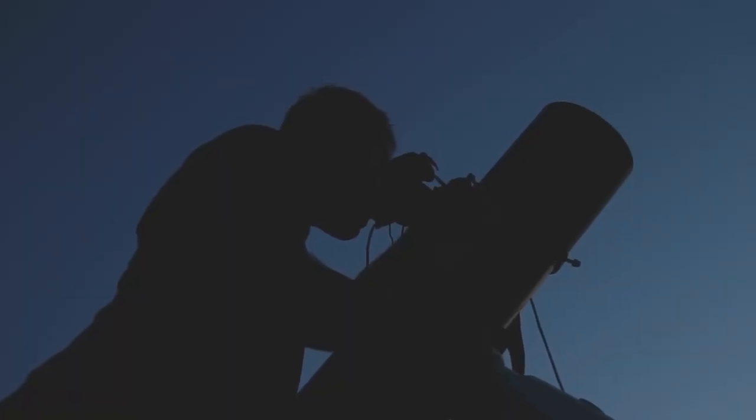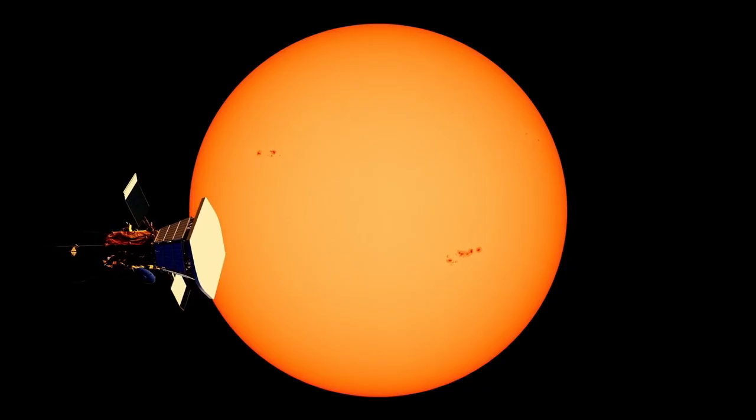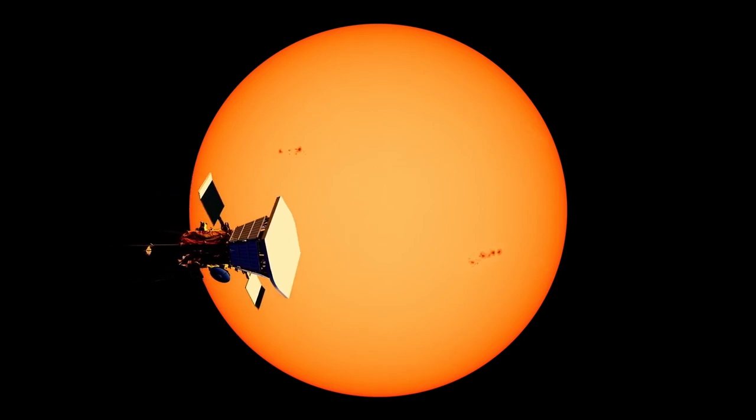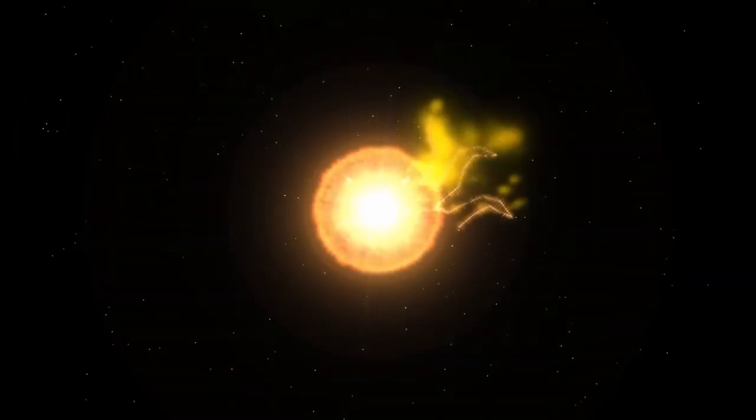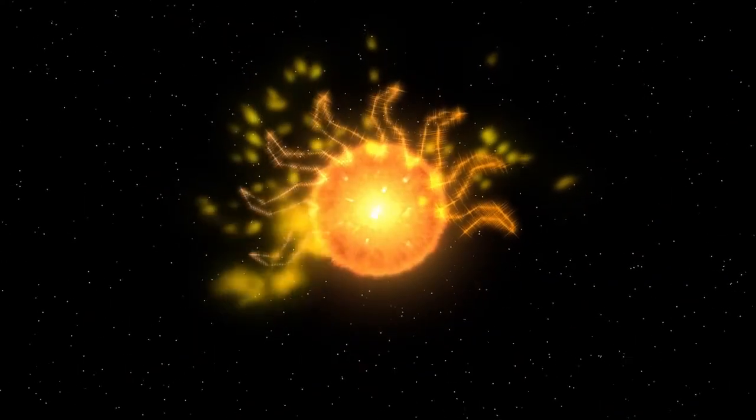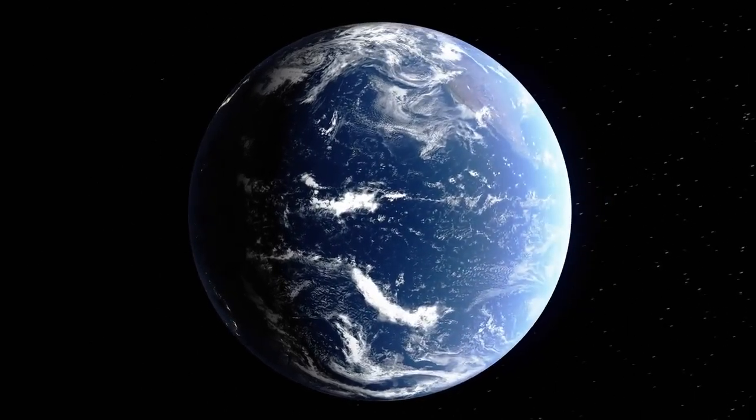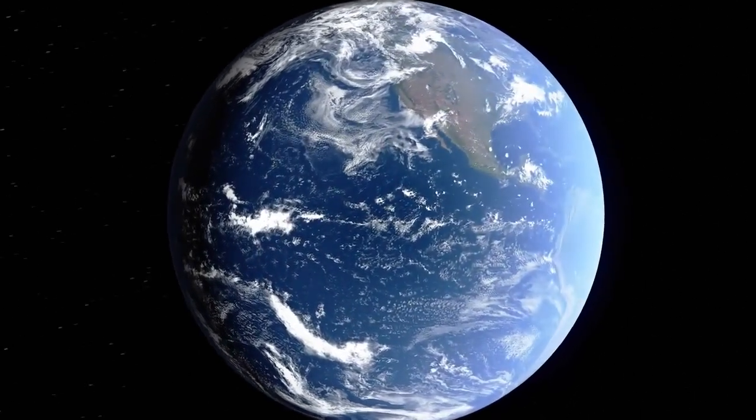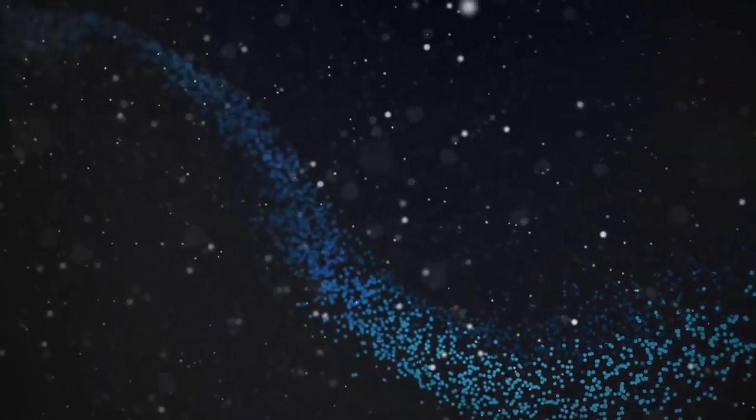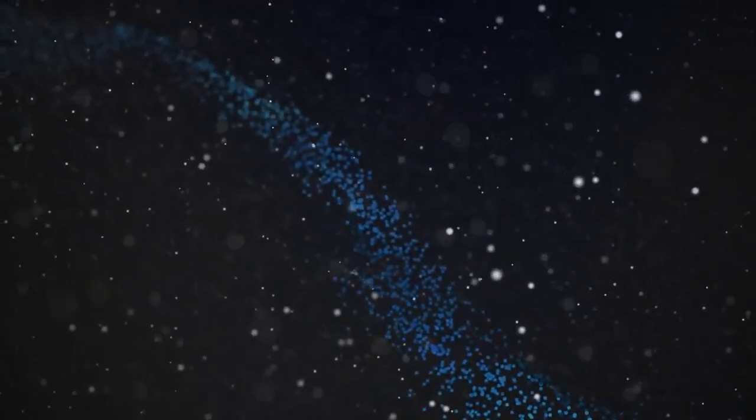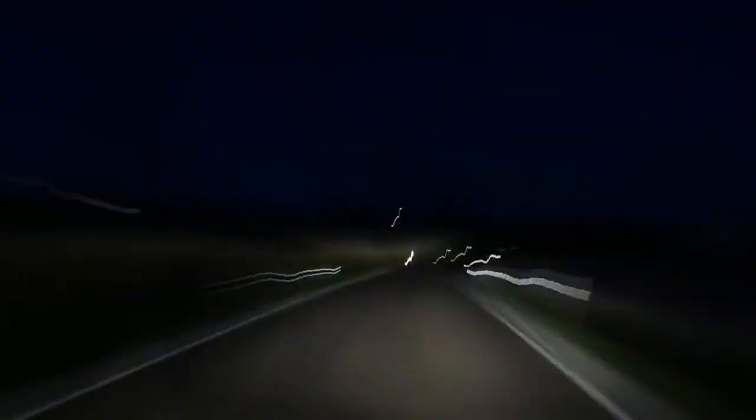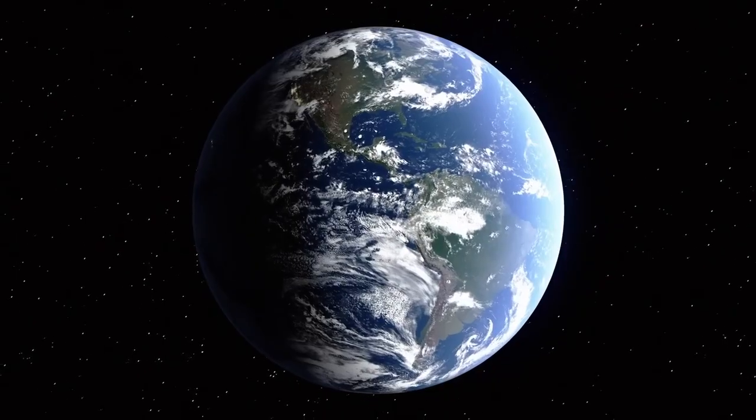They've named it 3i Atlas, and its final recorded transmission has left scientists in silent disbelief. What they discovered is not merely strange, it borders on the impossible. Some experts whisper theories that others dare not say aloud. The data suggests this object might not be natural at all. Something about its movement, its reflection, its silence—each piece points toward an intelligence at work. Could it be a messenger, a machine, a relic from another civilization lost to time? No one knows, but everyone is watching.